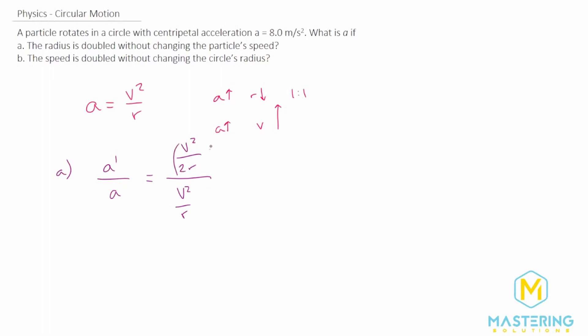We have two fractions that we're dividing, which is the same as multiplying by the reciprocal. So we have v squared over 2r divided by v squared over r. The v squared will cancel.